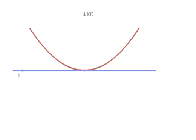By the way, it's going to help later on to notice that the kinetic energy is symmetric about this vertical axis. That is, we can change the sign of the velocity v, and the kinetic energy doesn't change.